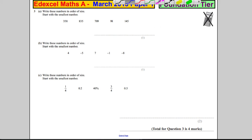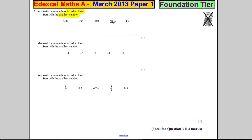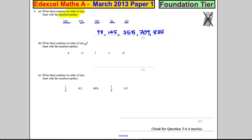Question 3: we are asked to write these numbers in order of size, starting with the smallest. I look through them and find the smallest, which is 98 — underline it. I find the next smallest, which is 145; the next smallest, which is 358 — put a comma in between to avoid confusion; the next smallest, which is 709; and the next smallest, which is 835.